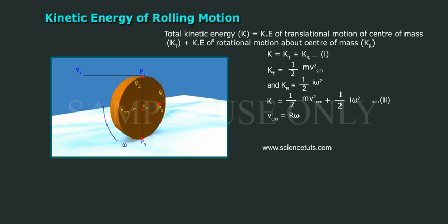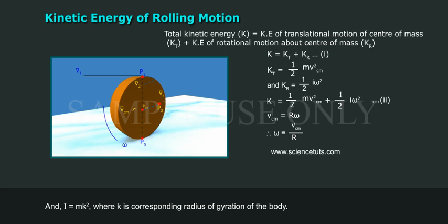V_CM = rω, therefore ω = V_CM/r, and I = mk², where k is the corresponding radius of gyration of the body.